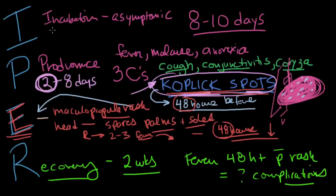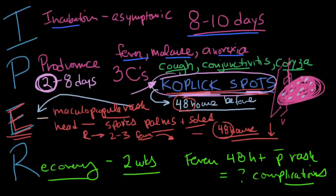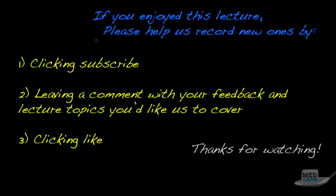To review: there are four stages. The incubation period lasts more than a week. The prodrome brings fever, malaise, anorexia, the three C's, and Koplik spots appearing 48 hours before the rash. When the rash comes, Koplik spots go away; fevers continue but start improving after 2 to 3 days as the rash coalesces and sloughs off. Fevers continuing after 48 hours post-rash are not a good sign. The recovery phase is about two weeks. In the next video, we'll cover diagnosis and treatment of measles.